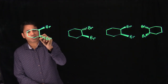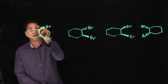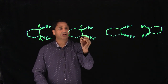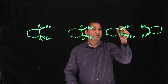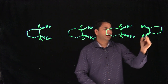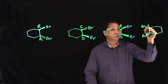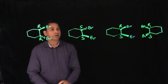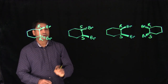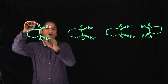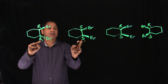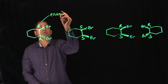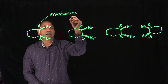Assigning R and S to the stereogenic carbons: one structure is R,R and another is S,S. There is also an R,S and an S,R structure. When comparing R,R to S,S — they are exactly opposite — those are enantiomers. When comparing two structures that are exactly opposite at all stereocenters, they are enantiomers.